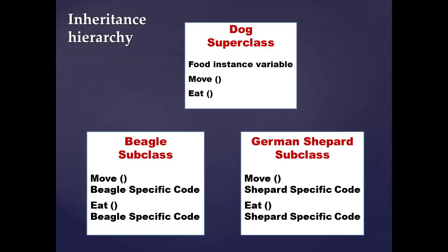Remember, inheritance is not just about reusing code. It's about establishing relationships and behaviors between the various classes, or common characteristics. The subclasses beagle and German shepherd inherit from the superclass dog, and therefore we inherit all of the dog's methods and can use all the functionality of the dog superclass.